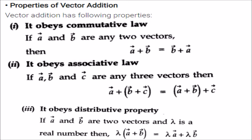Properties of vector addition: it obeys the commutative law — A + B equals B + A. It obeys the associative law — (A + B) + C equals A + (B + C). It also obeys the distributive law — when multiplied by a real number λ, λ(A + B) equals λA + λB.